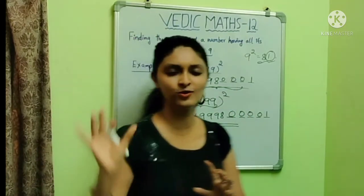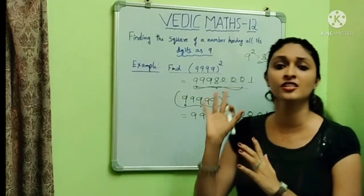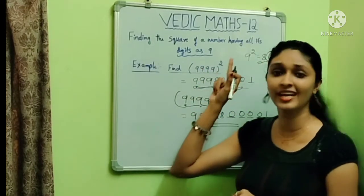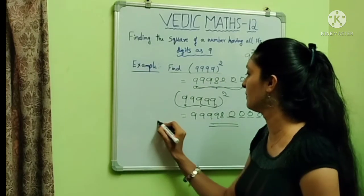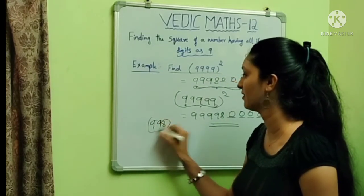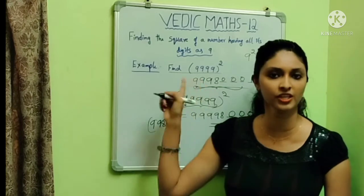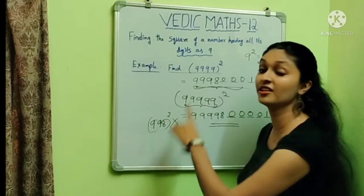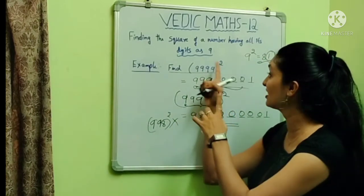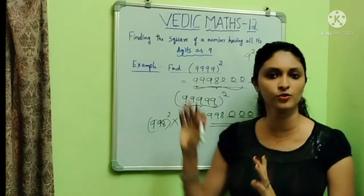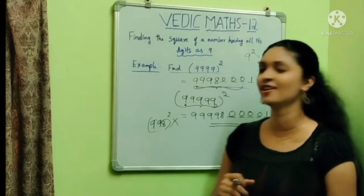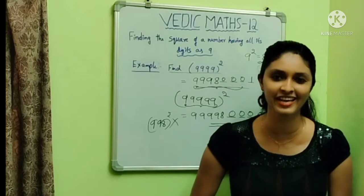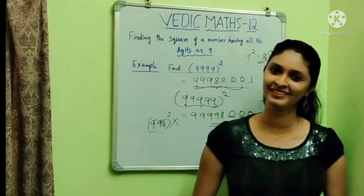Similarly, using this trick we can deal with finding the square of any number having only the digit 9. This trick will not be applicable for numbers like 998, because one digit is 8 — only numbers whose every digit is 9 can use this trick. After watching this, don't you feel it is interesting? If you really liked it, please like, share, and subscribe to my channel. Thank you, bye.